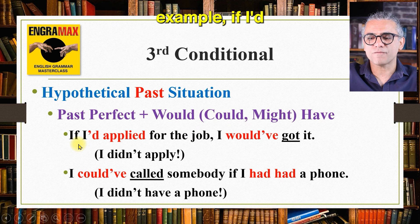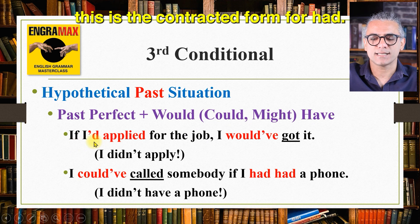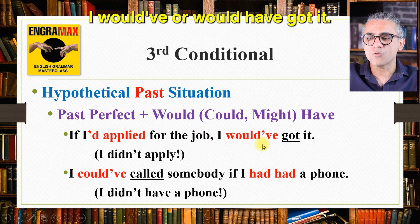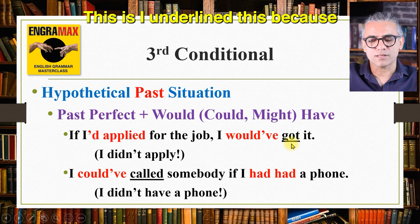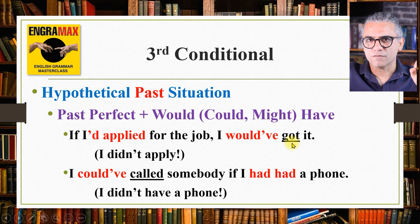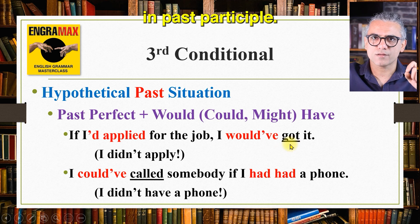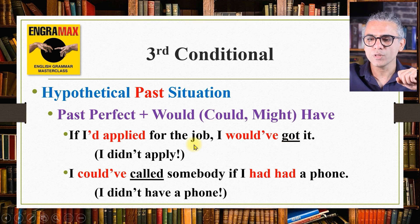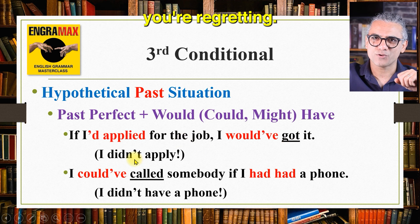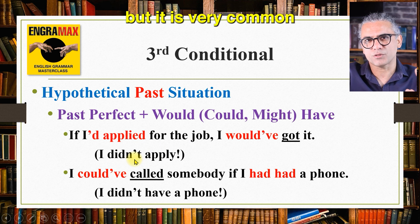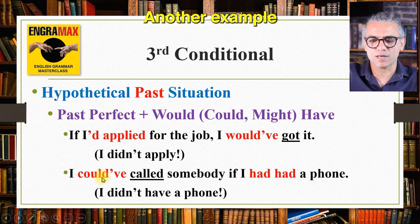Example: if I'd applied for the job — 'I'd' is the contracted form of 'had' — I would have got it. I underline this to emphasize that the main verb after 'have' is always in past participle: get, got, got. If I'd applied for the job, it means I didn't apply for the job. You're expressing regret, though it's not necessarily always regret — but it is very common to express that meaning.